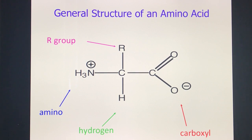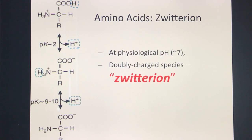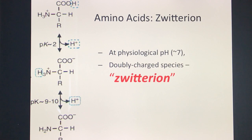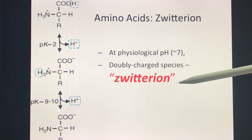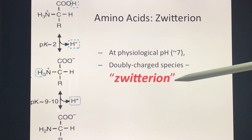It is the R group which determines the classification of the amino acid — for example, whether it is a branched chain amino acid or a basic or acidic amino acid. Now, some basics from the textbook: there is a terminology called the zwitterion. At a physiological pH of 7, all amino acids will exist in a zwitterion state, meaning they carry a double charge — this is the doubly charged species known as the zwitterion state.